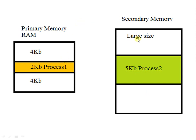Here is a scenario where secondary memory contains a 5KB process. Our main memory is 10KB in size. There are two 4KB free blocks, totaling 8KB of free space, and 2KB is occupied by process 1. Process 2, which is 5KB, is in the ready state and waiting for allocation in primary memory. Since primary memory has 8KB free and process 2 only requires 5KB, it should get memory space.